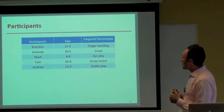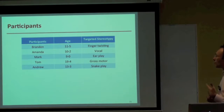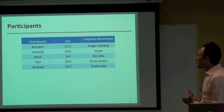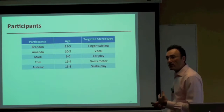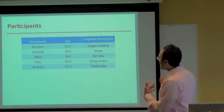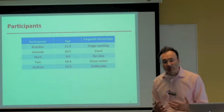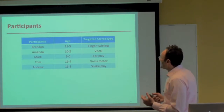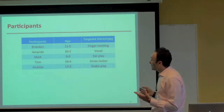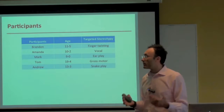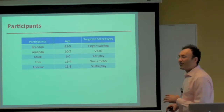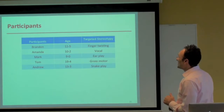A table shows each participant's pseudonym, age at the start of the study, and targeted stereotypy. Mark was the youngest at nine years and zero months; Tom was the eldest at 19 years and four months. I highlight this because in the vast majority of studies on stereotypy, participants are children — but we have children, teens, and a young adult, providing a measure of generality across ages.